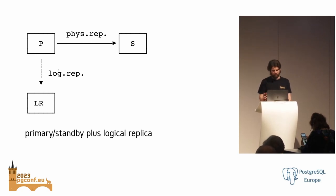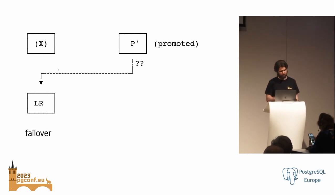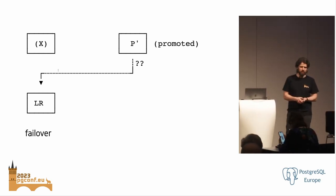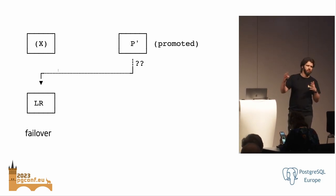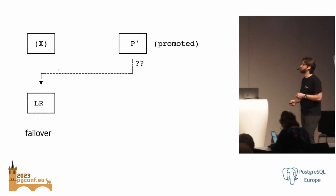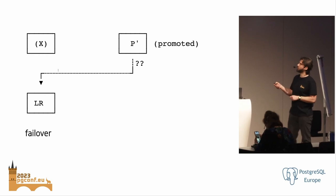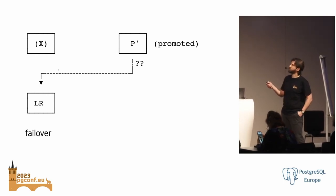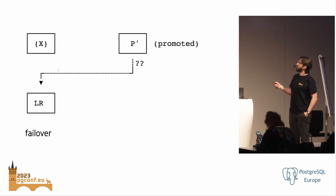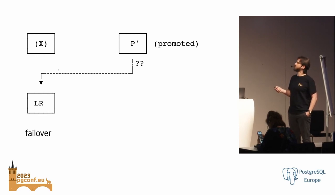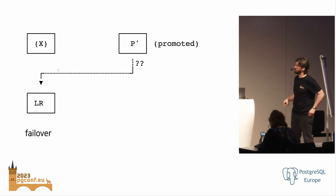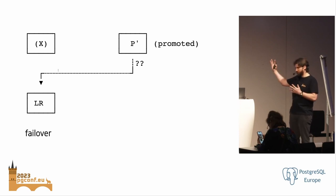Now, what happens if you actually need to do the failover? You would disable the old primary, fence it off, update connection routing so clients connect to the new promoted node. You would also point the logical replication client to the new primary and it would reconnect and try to continue — but that actually doesn't work.